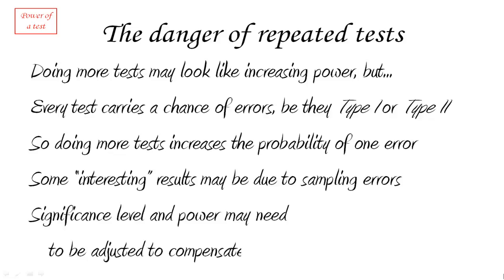In order to take that into account, researchers often adjust the significance level and/or the power of the test to compensate for this problem, making sure that spurious or misleading results do not happen as easily.